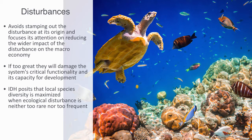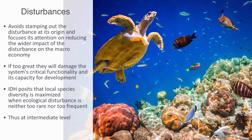IDH posits that local species diversity is maximized when the ecological disturbance is neither too rare nor too frequent. At high levels of disturbance, due to, for example, forest fires or human impact, all species are at risk of going extinct. At low levels of disturbance, competitive exclusion increases, leading to a decrease in species diversity. Thus, at intermediary levels of disturbance, diversity is maximized.